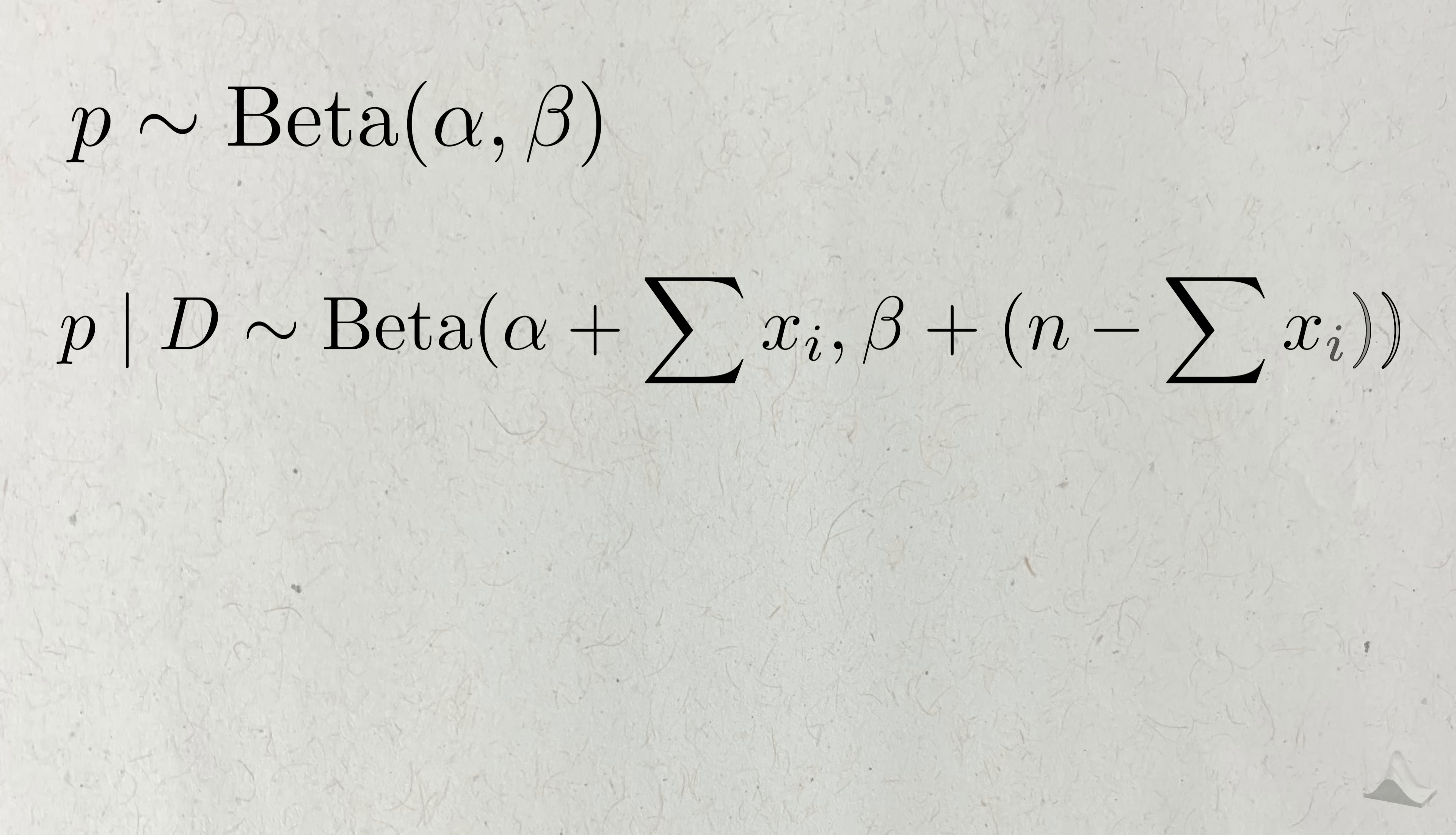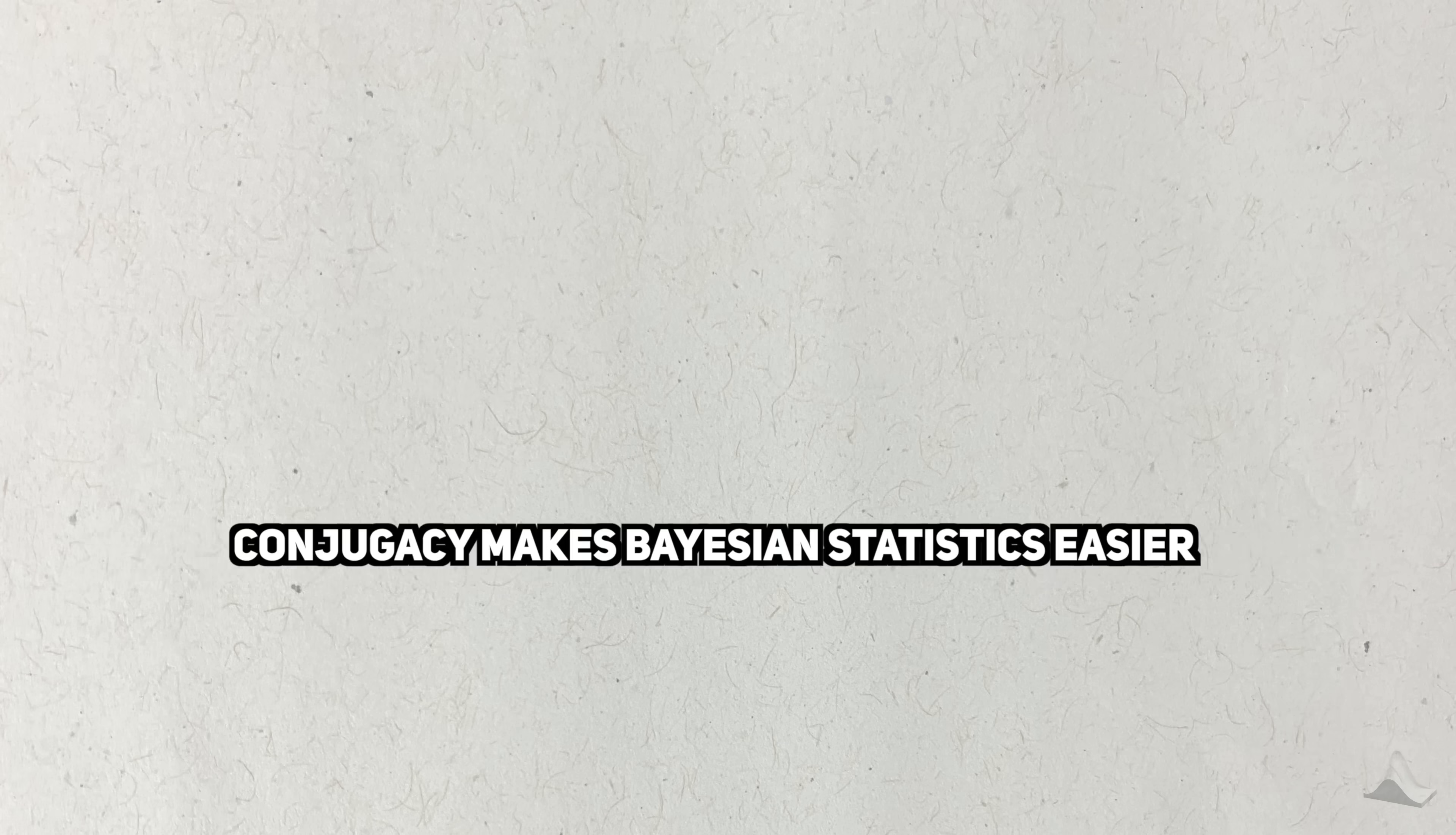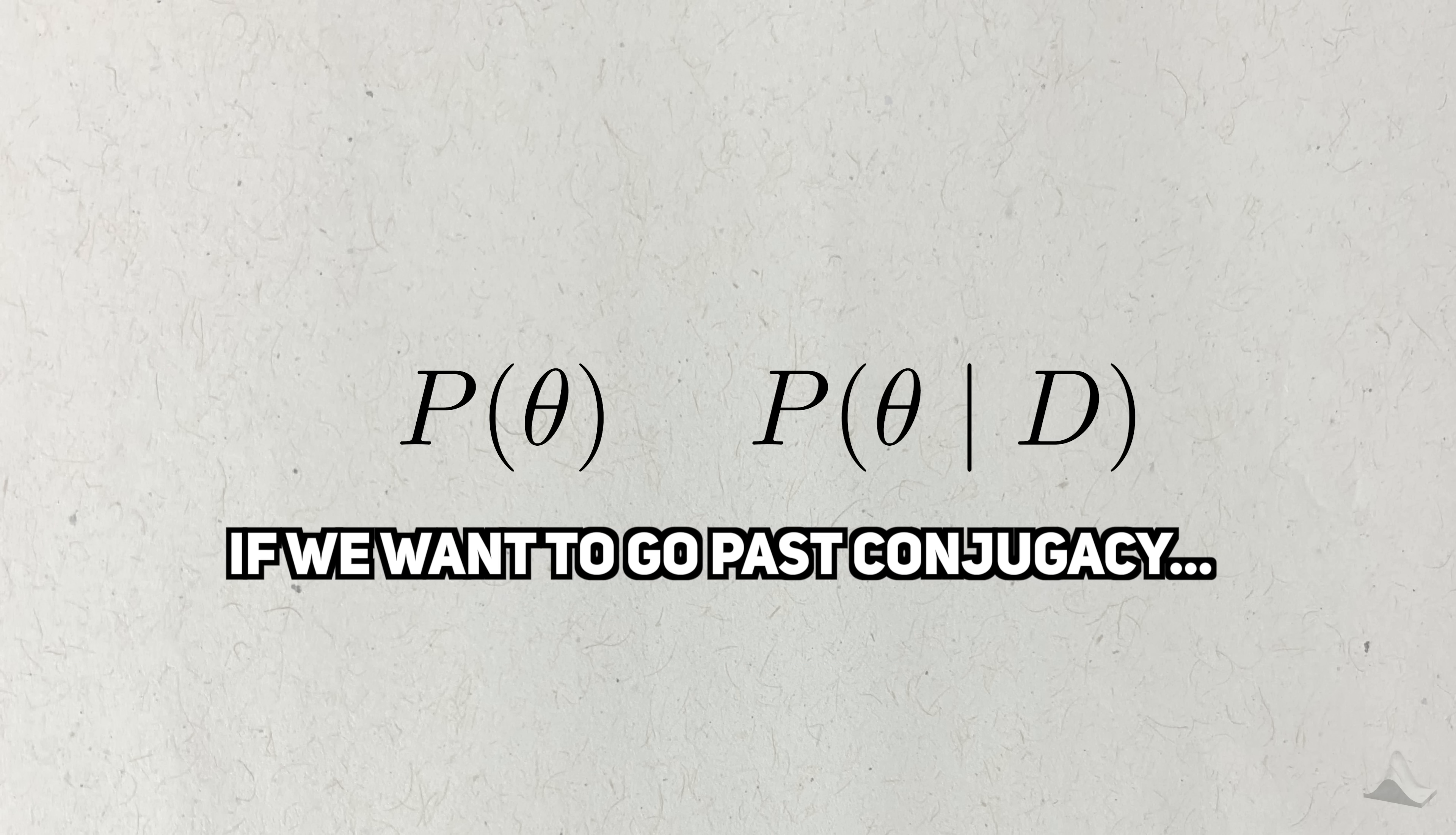Here, both the prior and posterior are betas, which can be said for a lot of people in my life. Since the likelihood was binomial, we refer to this as a beta-binomial model. In fact, this was the model used by Pfizer to demonstrate that their COVID vaccine worked. Conjugate priors make things easy, but they also constrain how we can represent our beliefs through the prior. If we want to go past conjugacy, we'll have to dive yet another level deeper into Bayesian statistics and face some scary math.